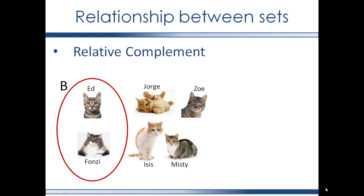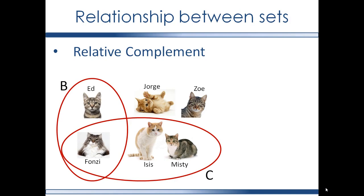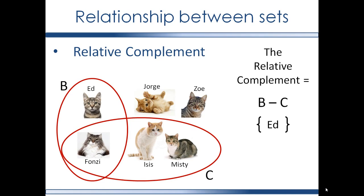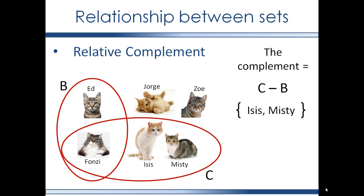A relative complement. The set of elements that are members of one set but are not members of another set form the set called the relative complement. The relative complement is indicated with a minus sign between the two sets. So here we have B minus C, which is the relative complement of C with respect to B. B contains Ed and Fonzie; C contains Fonzie, Isis, and Misty. So the relative complement of C with respect to B contains the elements of B — Ed and Fonzie — except that you take out Fonzie because he's in set C, so that just leaves Ed. And the relative complement of B with respect to C, denoted as C minus B, is a set containing Fonzie, Isis, and Misty, except again take out Fonzie because Fonzie is an element of B, so it's a set containing Isis and Misty.